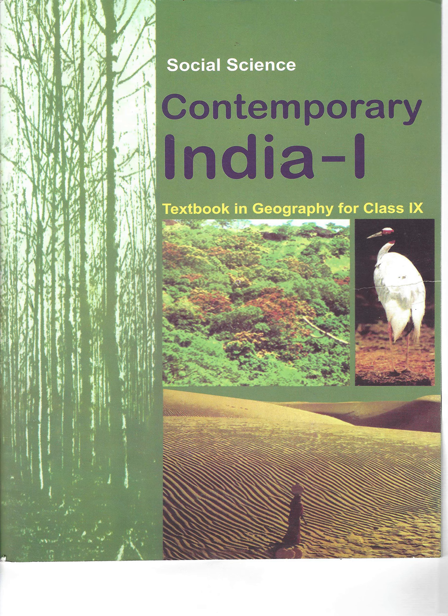Sex ratio is defined as the number of females per 1,000 males in the population. This information is an important social indicator to measure the extent of equality between males and females in a society at a given time. The sex ratio in the country has always remained unfavorable to females. Kerala has a sex ratio of 1,084 females per 1,000 males, Puducherry has 1,038 females for every 1,000 males, while Delhi has only 860 and Haryana has only 877 females per 1,000 males.